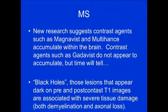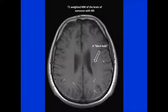Black holes are seen on T1 images — they appear dark on pre- and post-contrast T1 images and are associated with severe tissue loss involving both demyelination and axonal loss. When you see black holes, that's advanced multiple sclerosis. On this axial T1-weighted MRI of a patient with MS, the large arrow points to a black hole — it's simply dark, representing axonal loss.